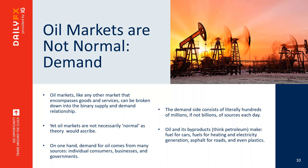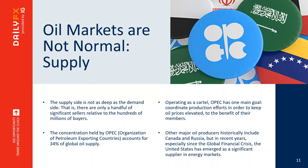Oil markets aren't normal as theory would ascribe. The demand from consumers is pervasive — the byproducts of oil are used in almost everything people use every day. If you're wearing workout clothing right now, there's a petroleum byproduct in your Under Armour or Nike clothing. We're talking about fuel for cars, fuel for heating, electricity generation, plastics — oil is everywhere. Demand is fluent through society, but supply isn't as deep. There's only a handful of significant sellers relative to the hundreds of millions of buyers each day. The concentration held by OPEC — the Organization of Petroleum Exporting Countries — accounts for 34% of global oil supply. Operating as a cartel, OPEC has really one main goal: to coordinate production efforts to keep oil prices elevated to the benefit of their members. Other major producers historically include Canada and Russia, but with the emergence of shale in the United States, the U.S. has become prominent too.